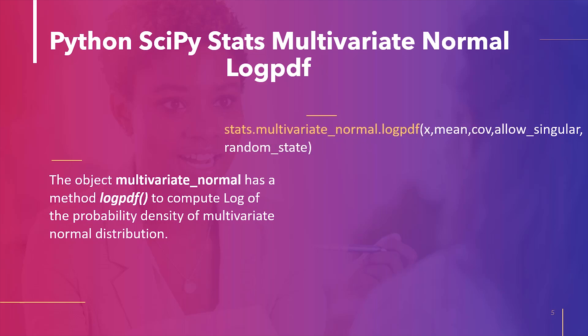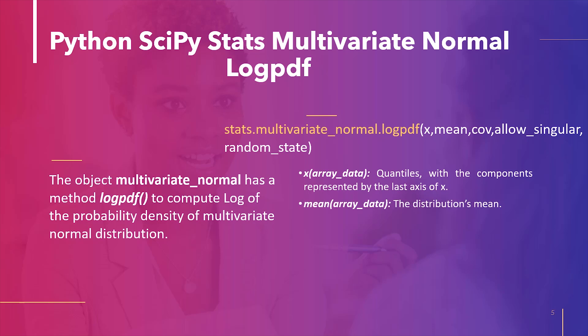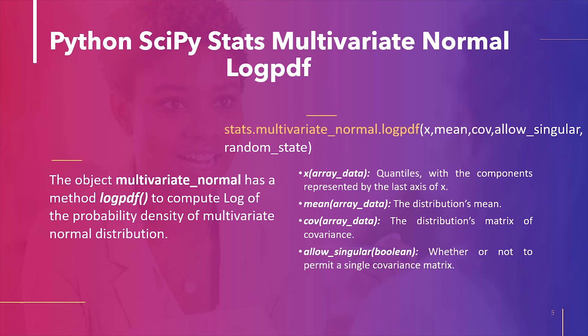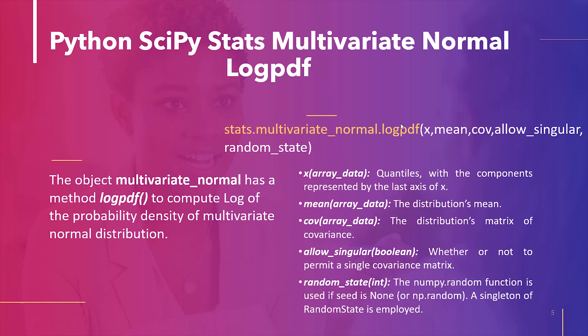The syntax of the method is as follows. Parameters: x represents quantiles with the last axis of x denoting the components; mean is the mean of the distribution, by default 0; cov is the covariance matrix of the distribution, by default 1; allow_singular: whether to allow a singular covariance matrix — by default False; random_state: if seed is None, numpy.random.RandomState singleton is used; if seed is an int, a new RandomState instance is used seeded with seed; if seed is already a generator or RandomState instance, that instance is used.